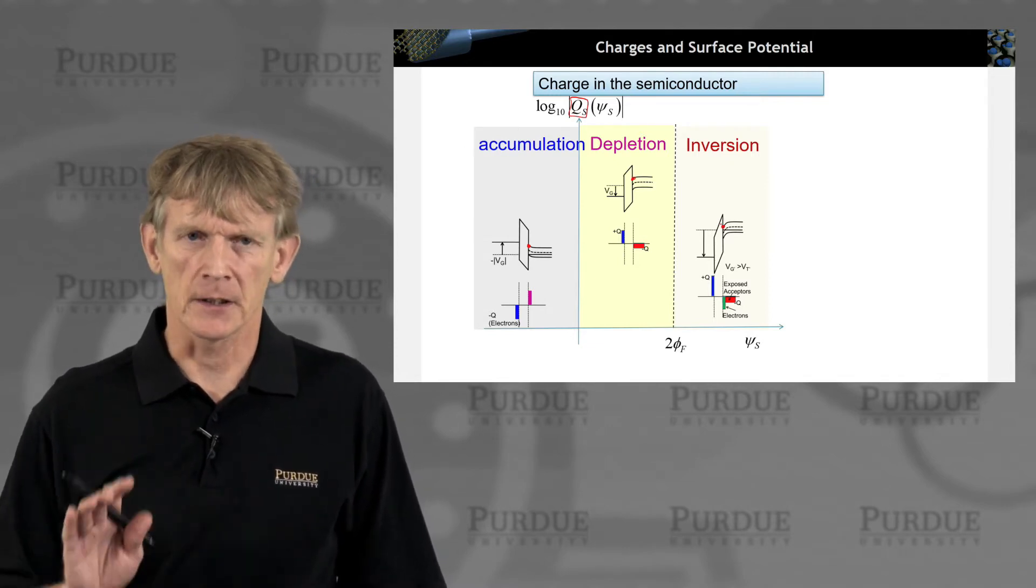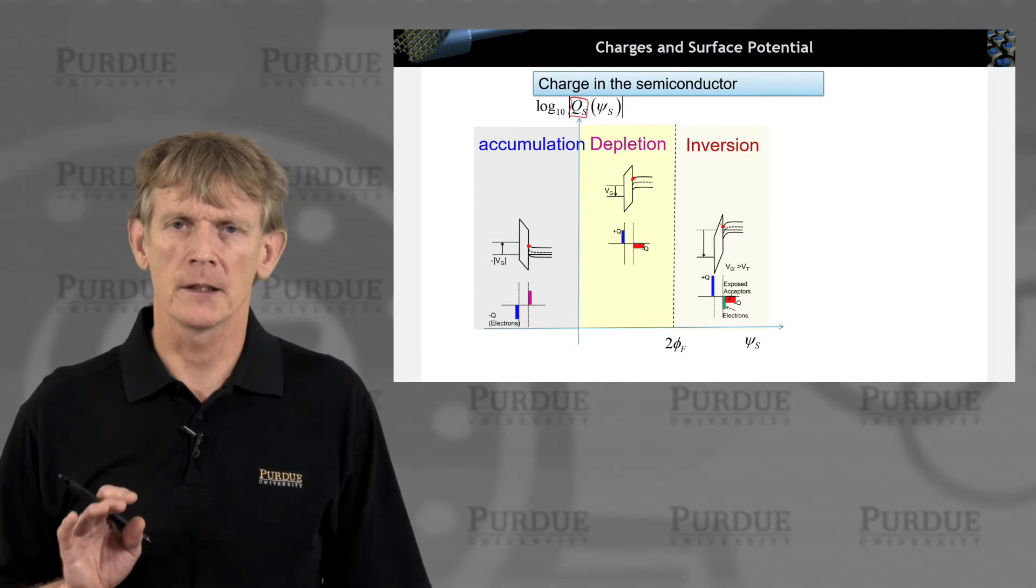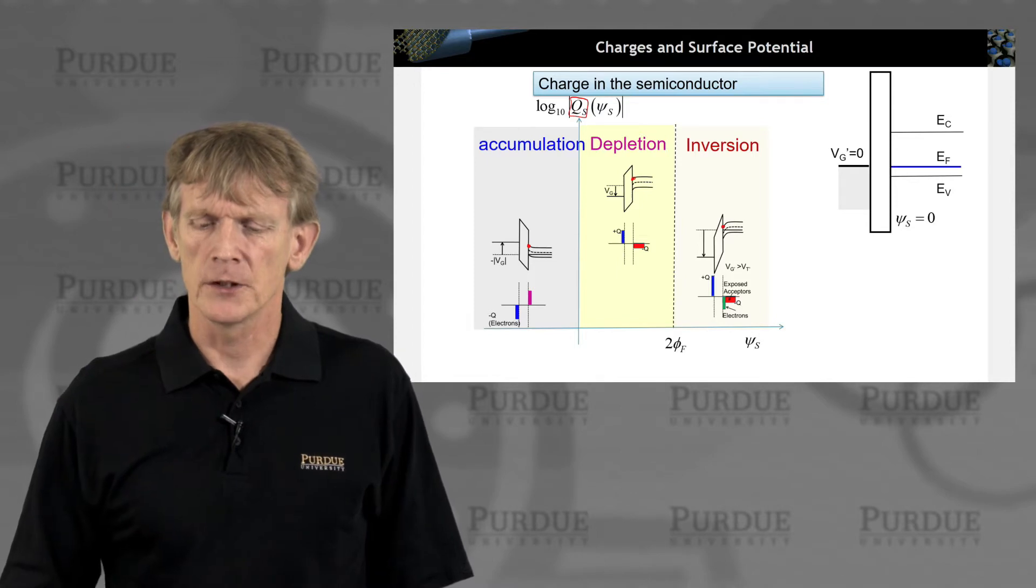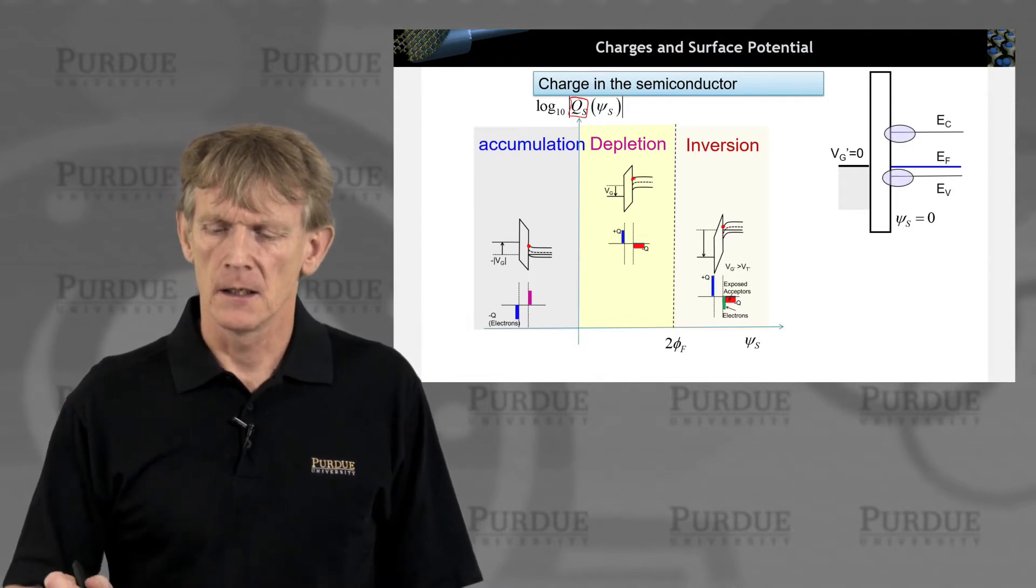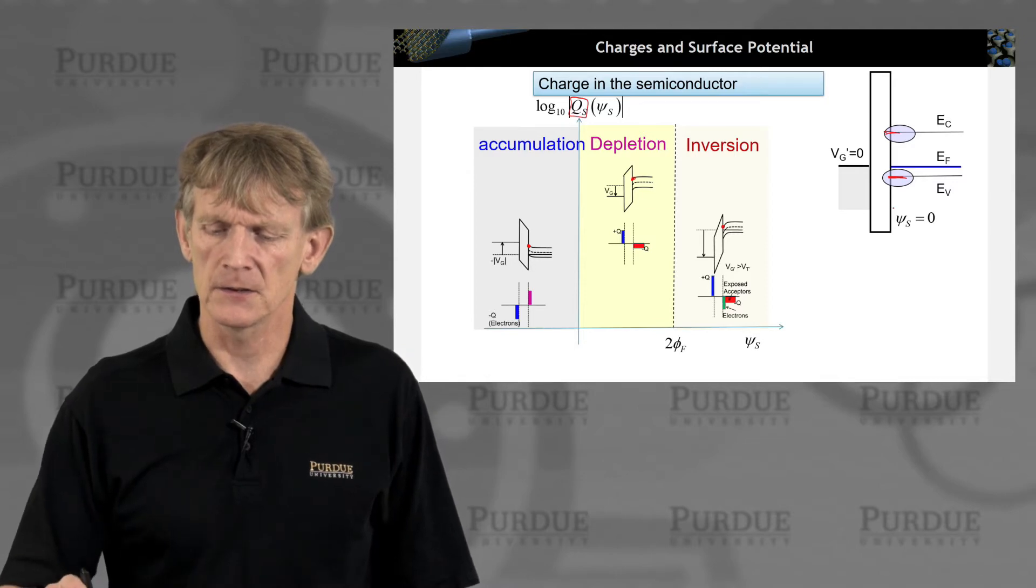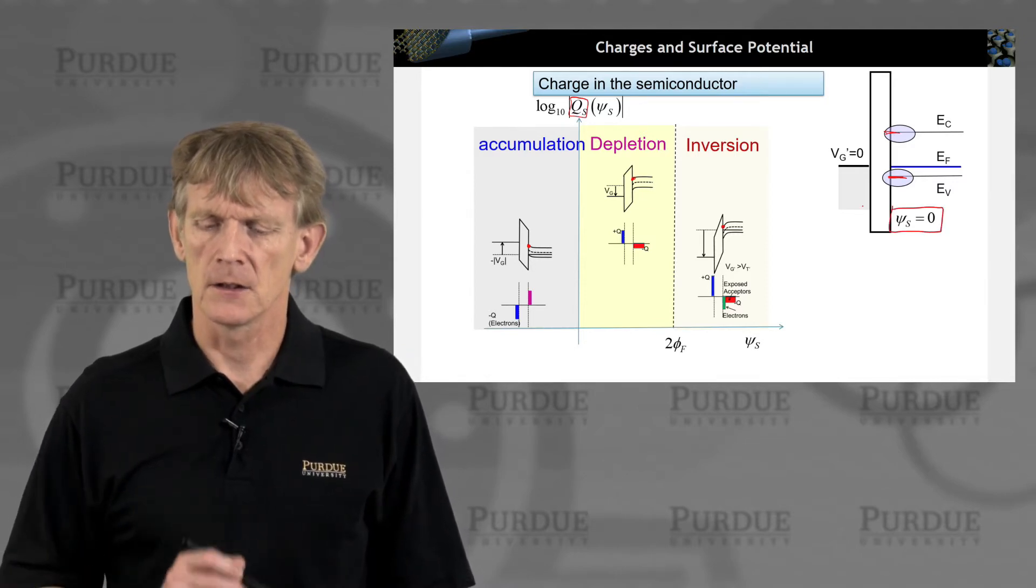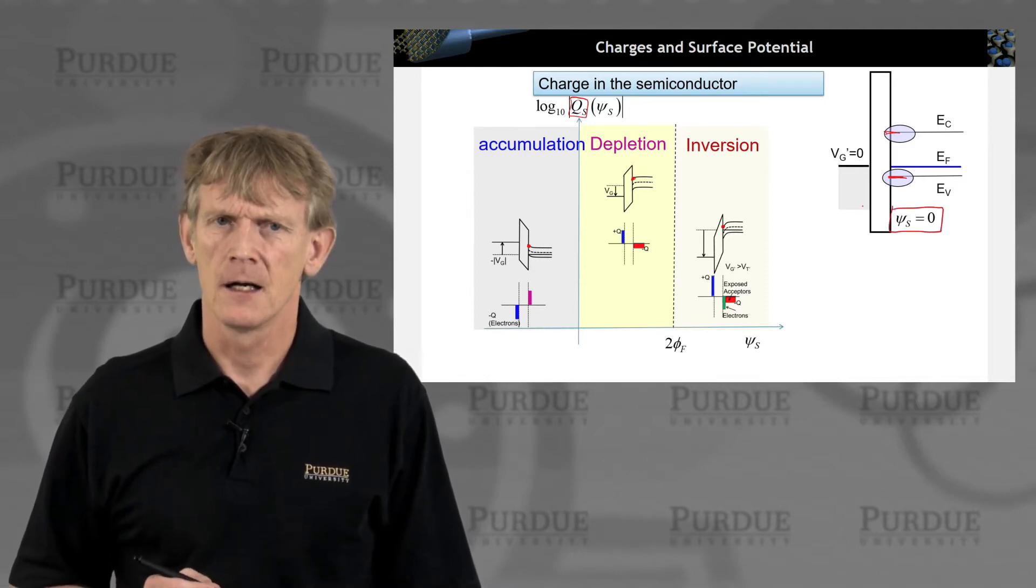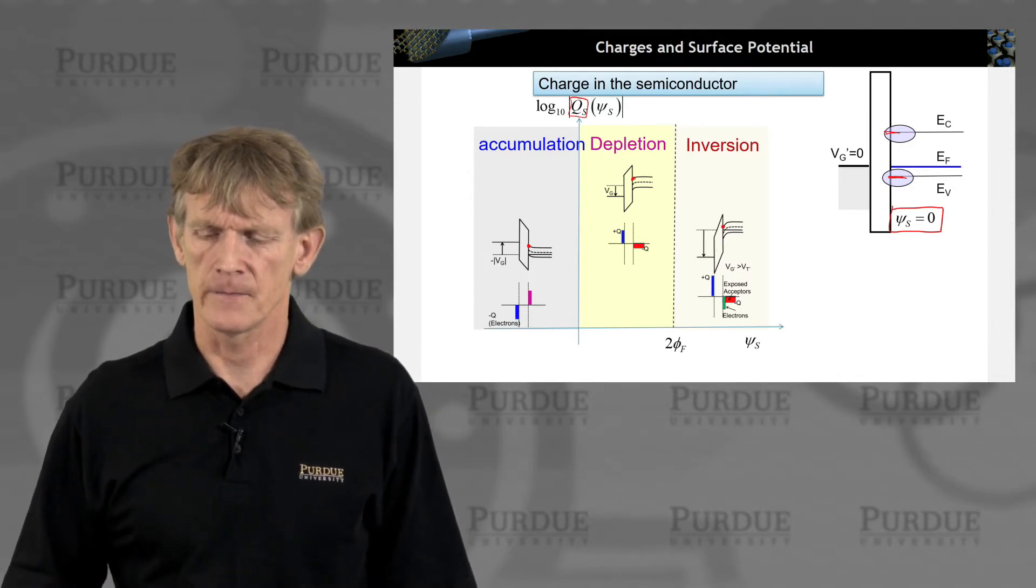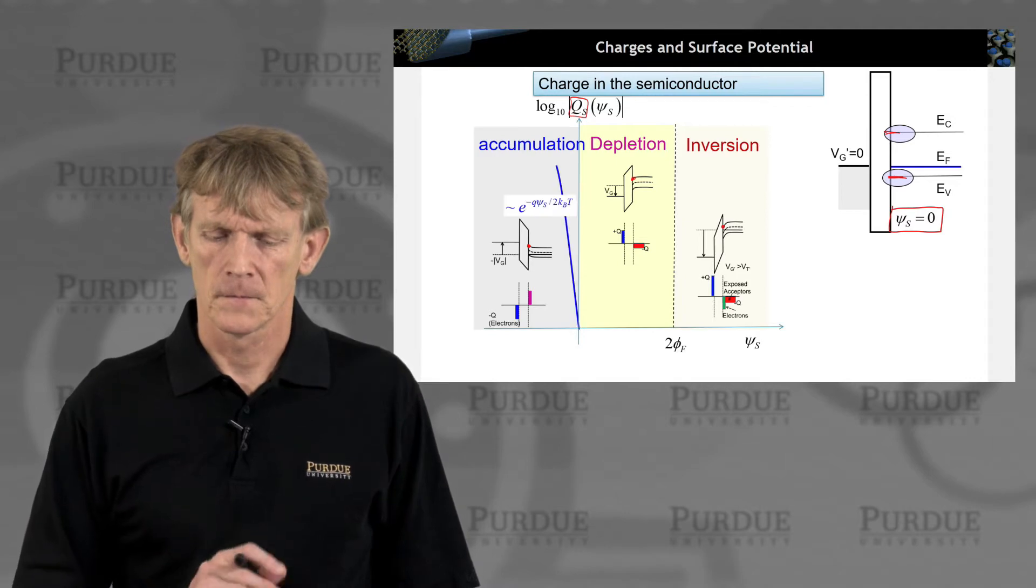So, semiconductor charge, we're not going to bother with the metal charge. Again, what we use here is the action that happens here at the bands over here, and this is what we call the semiconductor psi s to be zero at the flat band condition.